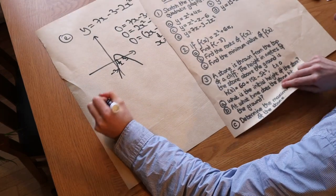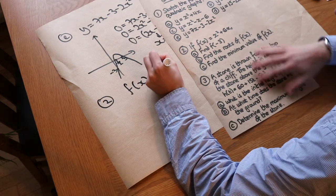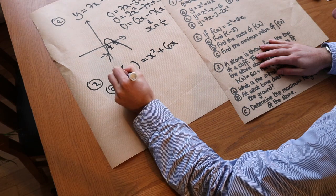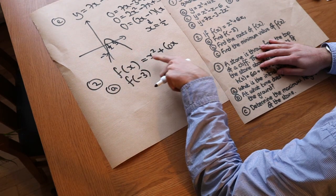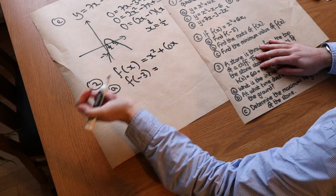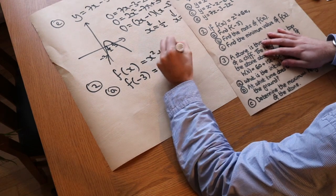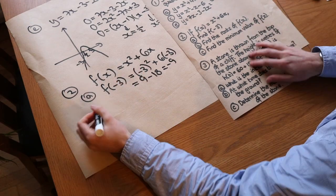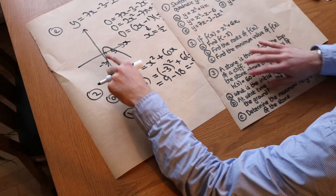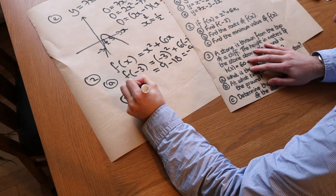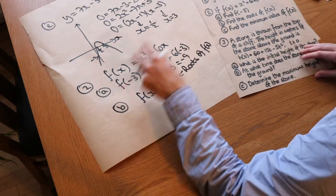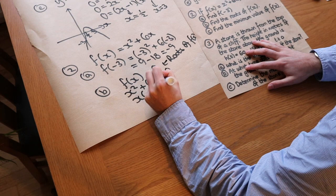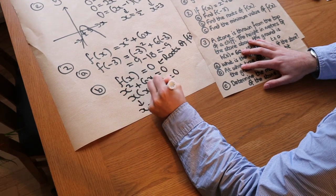Question 2: f(x) equals x squared plus 6x. This is a quadratic function using function notation. To find f(minus 3) we substitute minus 3 in: (minus 3) squared plus 6 times (minus 3) equals 9 minus 18 equals minus 9. To find the roots of f(x) we set f(x) equal to 0: x squared plus 6x equals 0, which factorises as x(x plus 6) equals 0, giving roots x equals 0 and x equals minus 6.